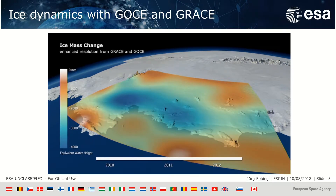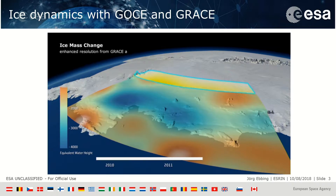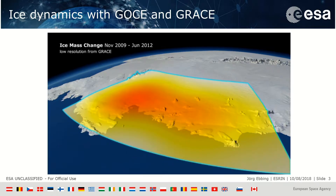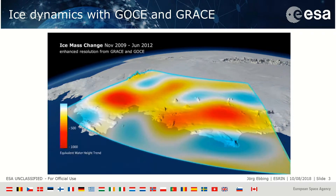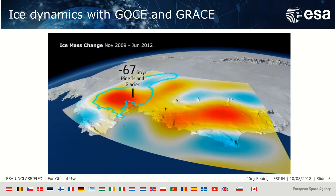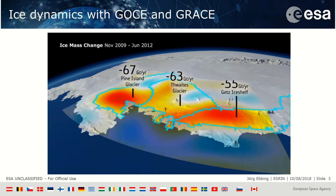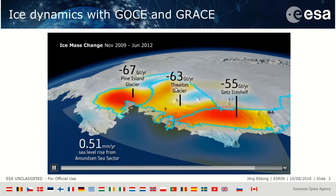In the Amundsen Sea embayment, GRACE gives low resolution where you don't really see where the mass change is occurring. With GOCE you can really pinpoint it and get a better quantification of the amounts. The numbers here show a huge ice loss: minus 67 gigatons per year, minus 63, minus 55. That's where most of the ice loss in Antarctica is occurring.